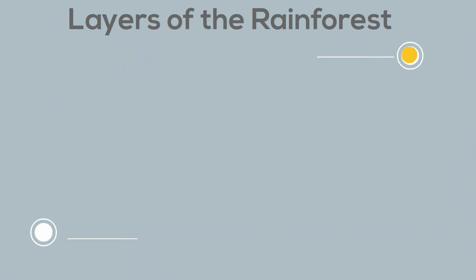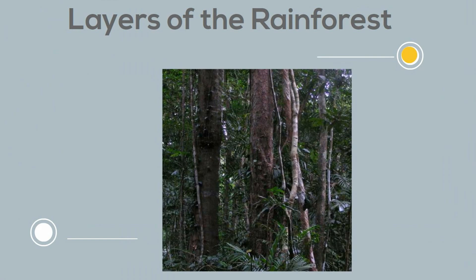The next layer is the understory layer. It is found between the canopy and the forest floor. It is home to a number of birds, small mammals, insects, reptiles, and predators.